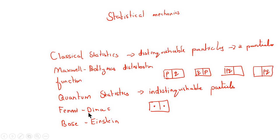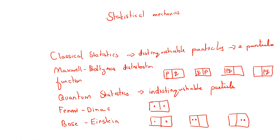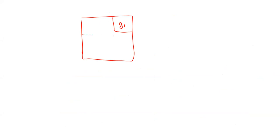For Bose-Einstein statistics, photons obey this kind of statistics. Here we can have arrangements where both particles are in the same compartment, as well as arrangements where they are distributed across compartments. Now, in our actual distribution, we're going to break these compartments into cells. So if this was one of your compartments, we're going to break it into cells of different sizes — G1, G2, G3 — and so on.